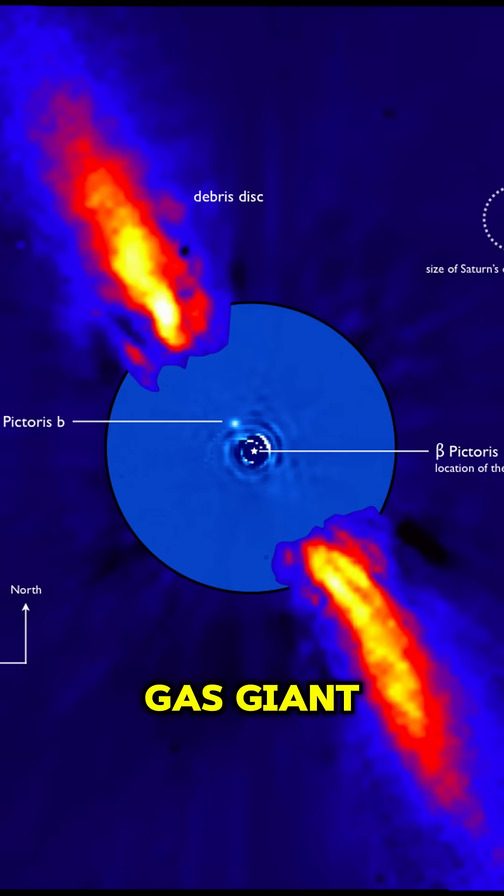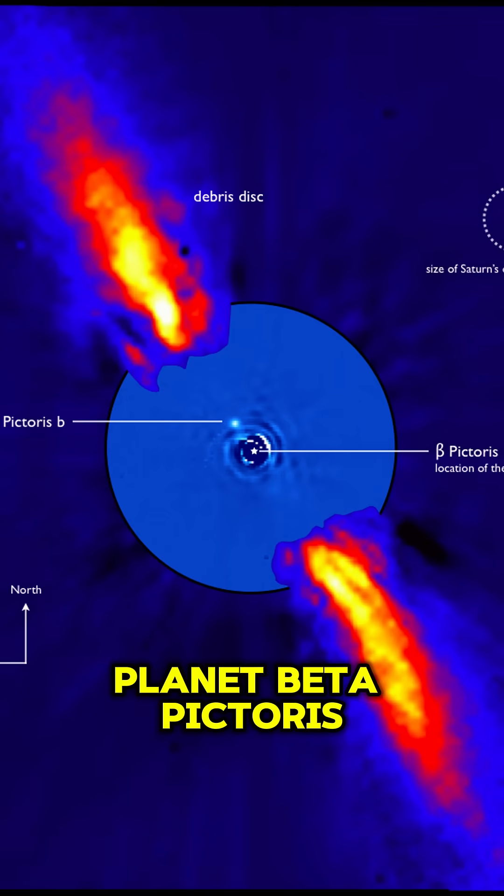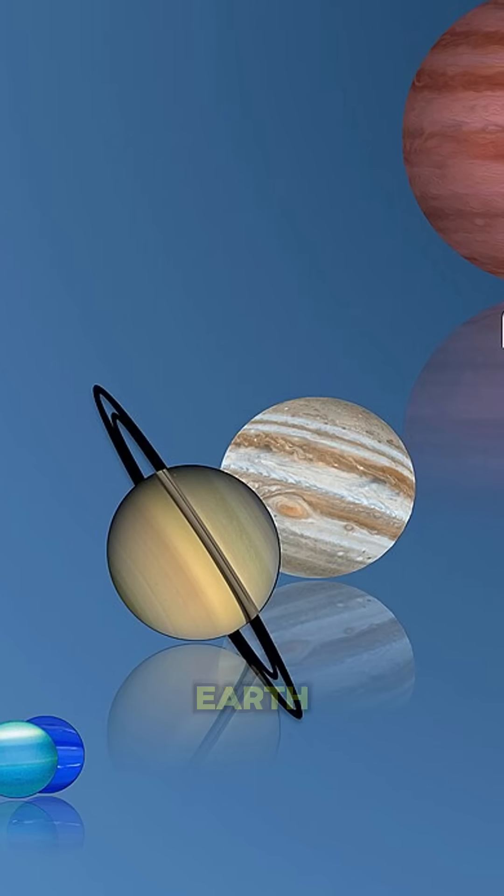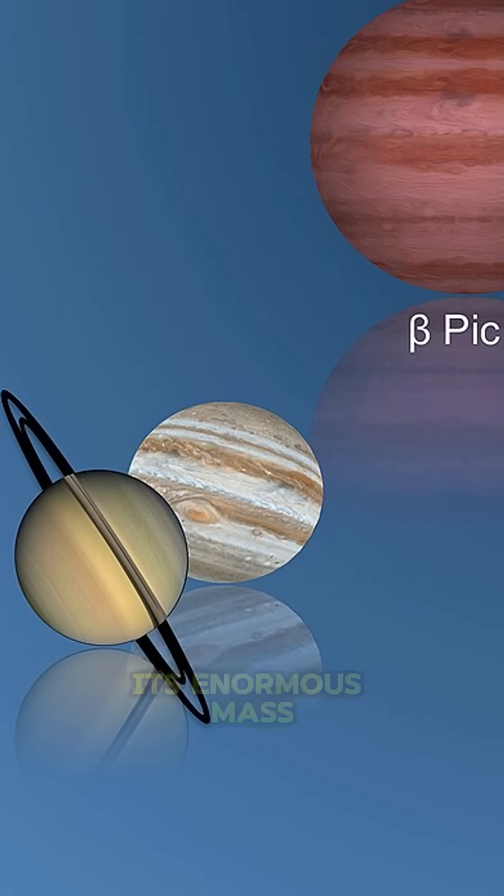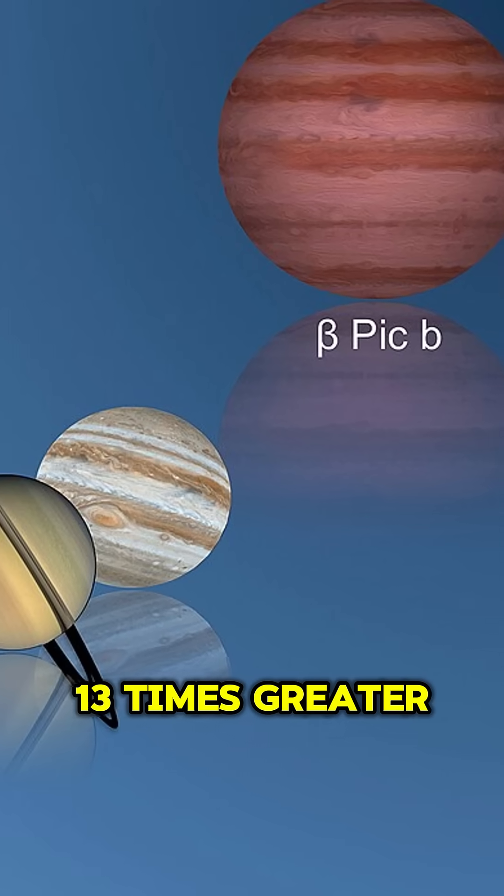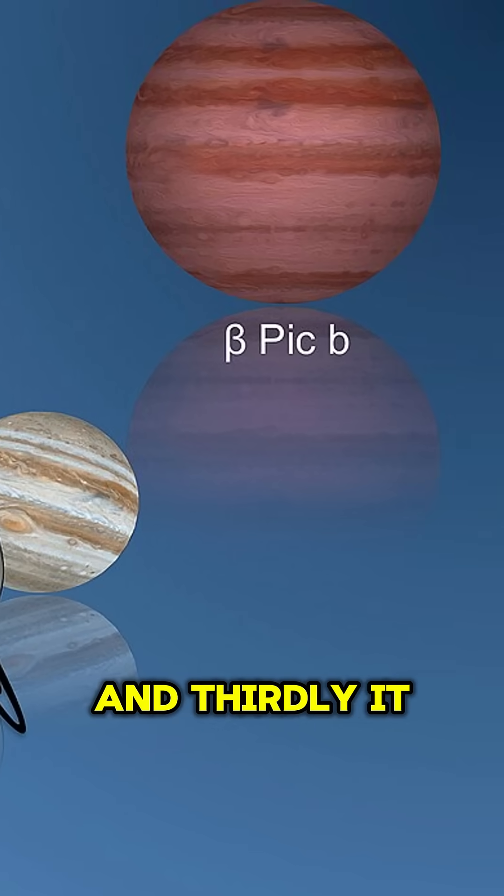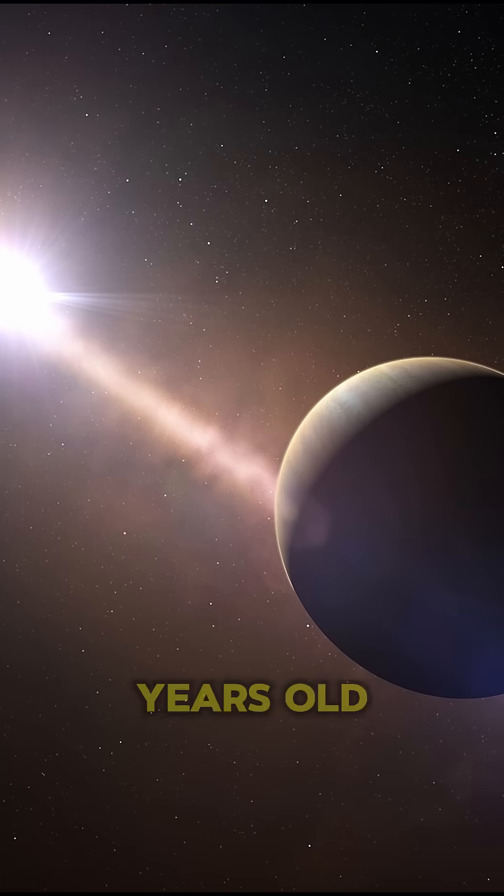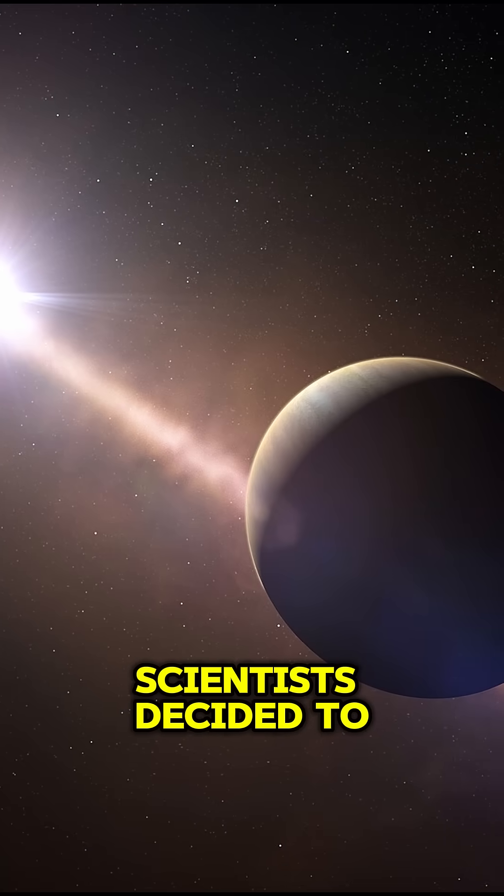They did not take a fictional gas giant but a real planet, Beta Pictorus b. It is interesting for several reasons: firstly because of its proximity to Earth, secondly because of its enormous mass, 13 times greater than Jupiter, and thirdly it is a very young world, 12 to 20 million years old.